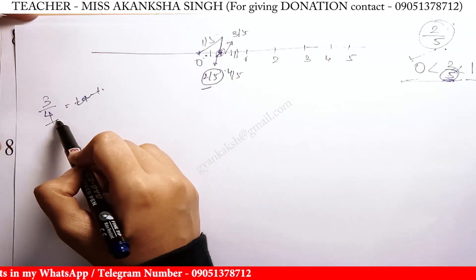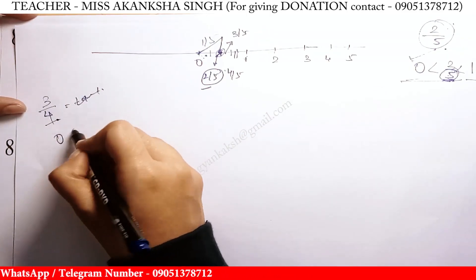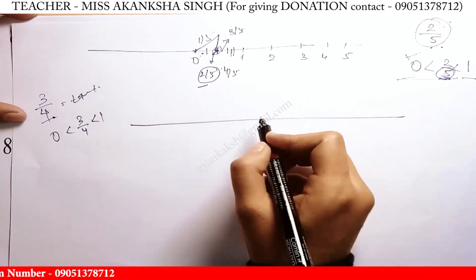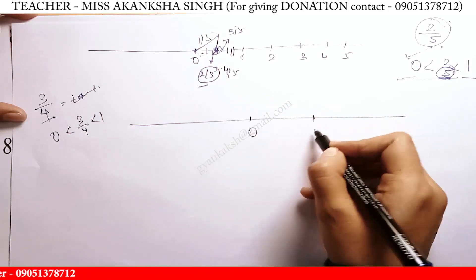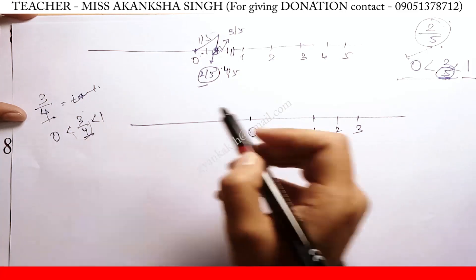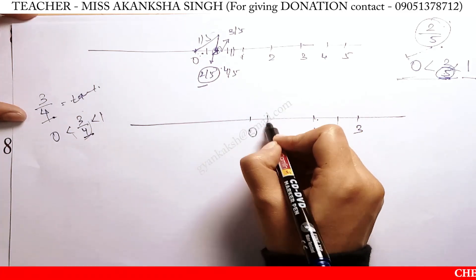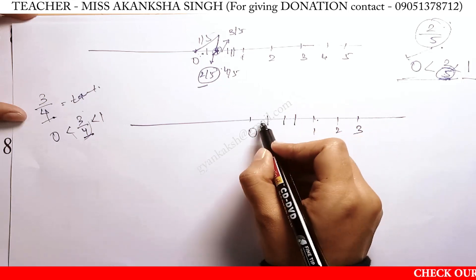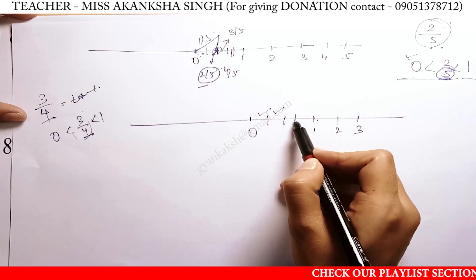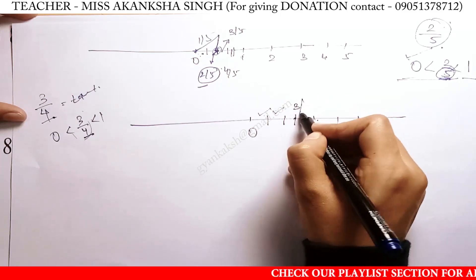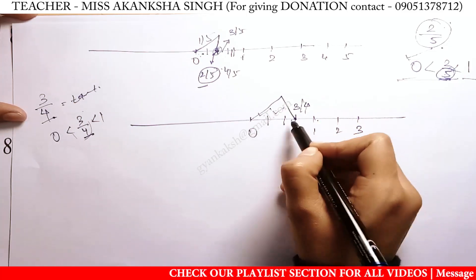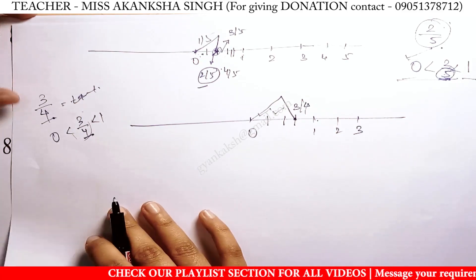Next, three by four. We will see — this will be zero and one, so we will make a number line. Here, what is three by four? The denominator is four. So: this is one by four, this is two by four, this is three by four. So this will denote it — this is our actual representation: three by four.